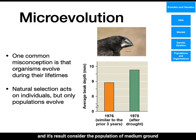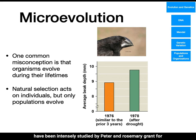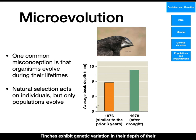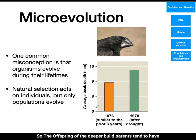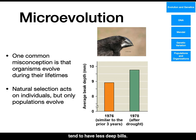There are three main causes or mechanisms that cause allele frequency change: natural selection, genetic drift, and gene flow. Only natural selection consistently causes adaptive evolution. One common misconception is that organisms evolve during their lifetimes — natural selection acts on individuals, but only populations evolve. As an example, consider the population of medium ground finches on the island of Daphne Major in the Galapagos, which have been intensely studied by Peter and Rosemary Grant for decades. Finches exhibit genetic variation in the depth of their bills. Some bills are more robust and others are less so, and the offspring of deeper-billed parents tend to have deeper bills.